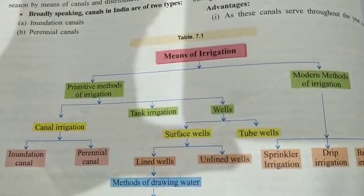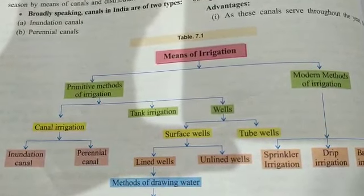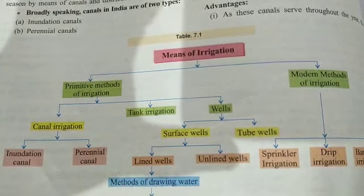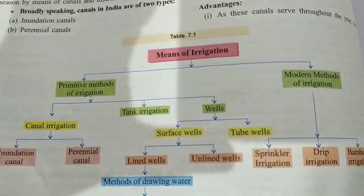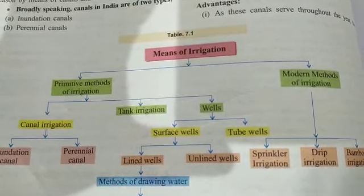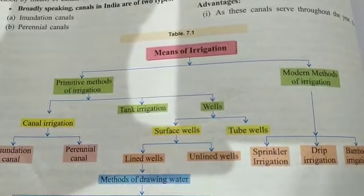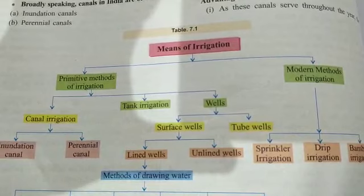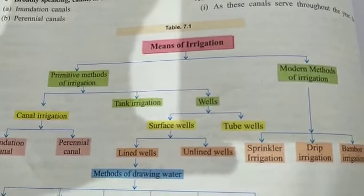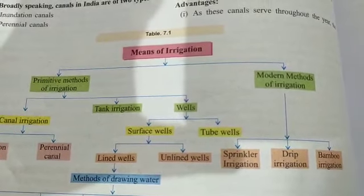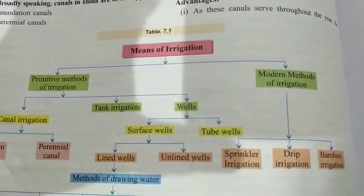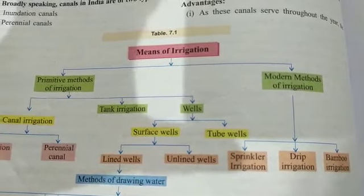Under well irrigation, we have surface wells and tube wells. Surface wells are further divided into lined wells and unlined wells. Under modern methods, we have sprinkler irrigation, drip irrigation, and bamboo irrigation.